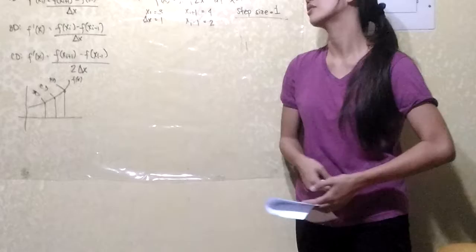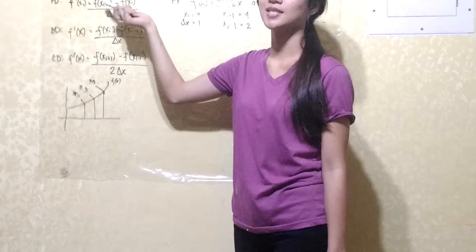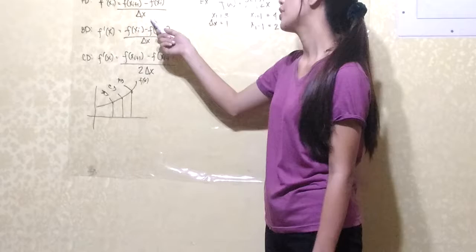This type of method is used for finding the derivative of a function. For the forward difference, the formula would be the point of interest plus the step size — which is 1 here — minus the point of interest, all over the change of x, which is also our slope.